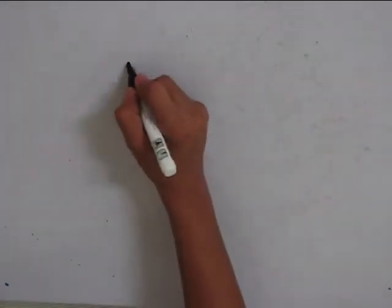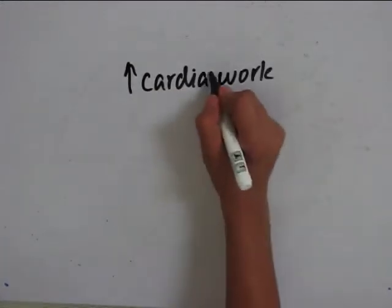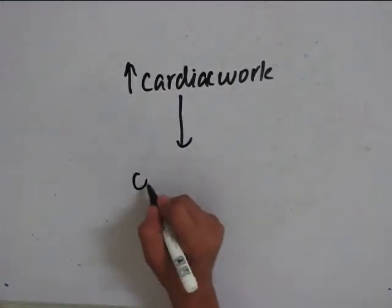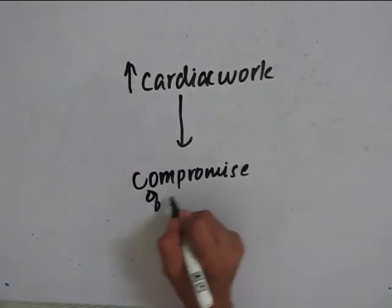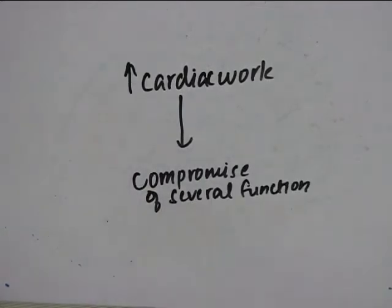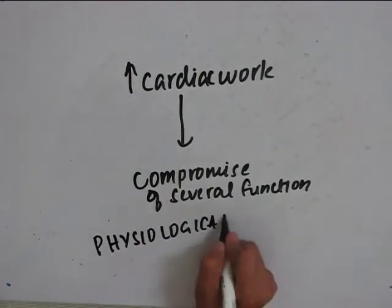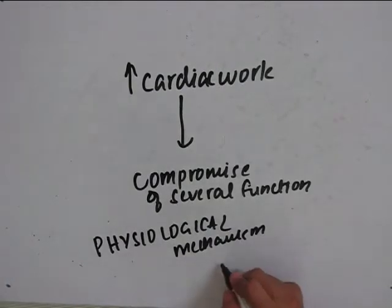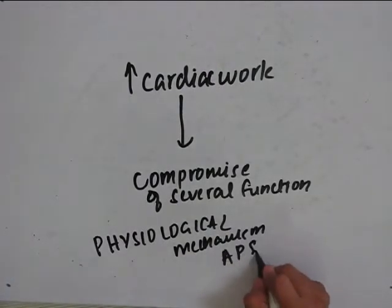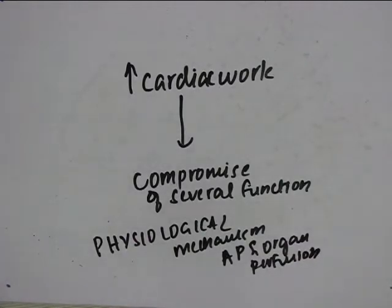When there is increased cardiac work, there is compromise of several functions. So, what does the body do? There are several physiological mechanisms which will maintain the arterial pressure and organ perfusion. Let us have a quick look at them.